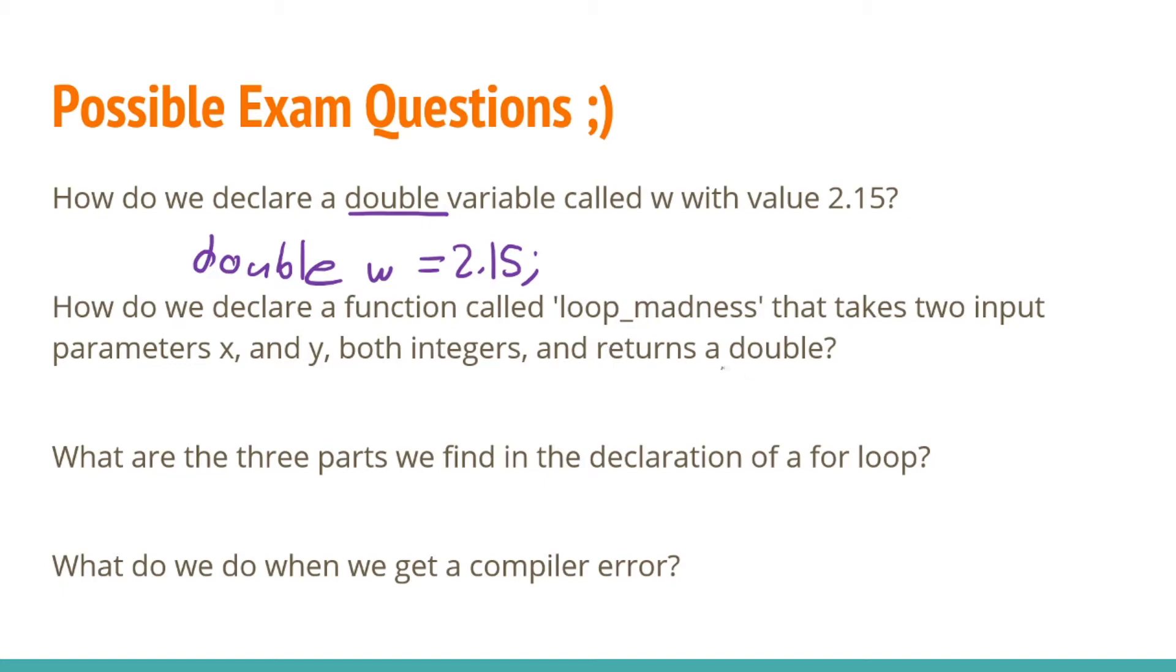To declare this function, we need to first write out the return type, which is double. Then we need to know the name of the function. Well that's loopmadness. And then we open it up with a parentheses. Here we put our input variables, which are int x, because both of these parameters are integers. And then we just end it with a semicolon. And that is how we declare a function.